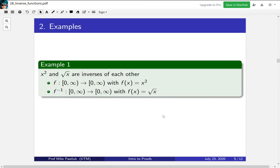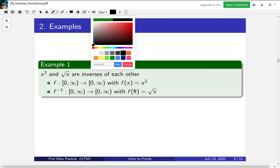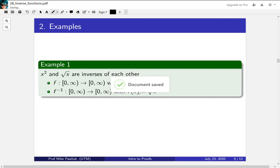Now let's look at some examples. x squared and square root of x are inverses of each other. So let f be the function from [0,∞) to [0,∞) where it's x squared. And then f inverse will have the same domain and codomain, but this time it will be square root of x. So these are inverse functions because they undo each other.